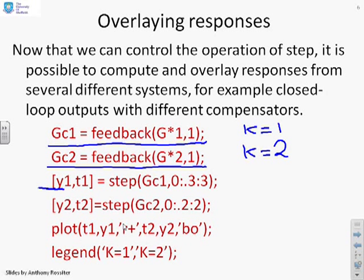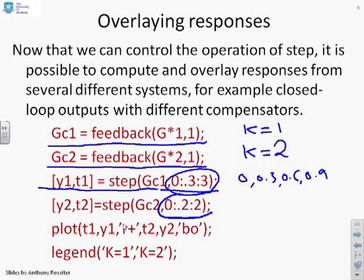What have I done next? I've said let's calculate the step response for the closed loop with K equals 1. And the key point to notice here is I've said I'm going to calculate it at times 0, 0.3, 0.6, 0.9 and so on. Now clearly, this is just for illustration. In general, you wouldn't be doing different time instances if you're doing a comparison. But we're trying to demonstrate what you can do with MATLAB very easily.